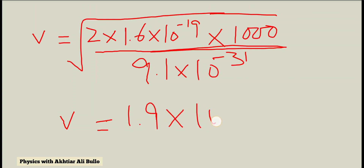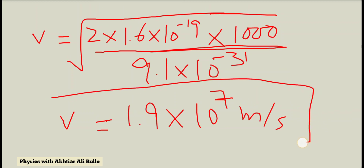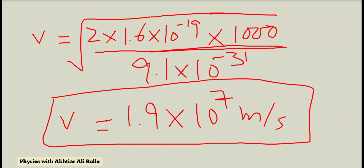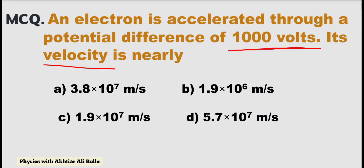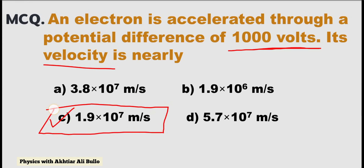So the velocity of the electron is obtained as 1.9×10⁷ m/s. Therefore, the correct option is C: 1.9×10⁷ m/s.